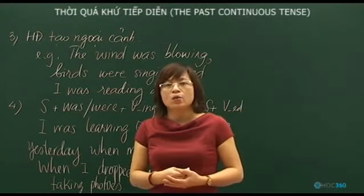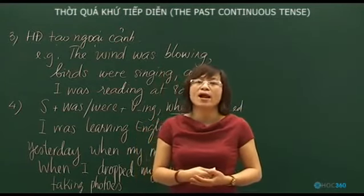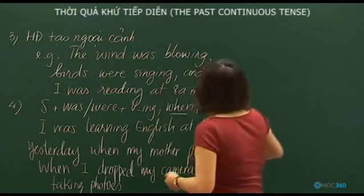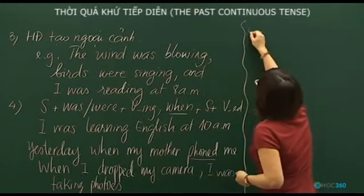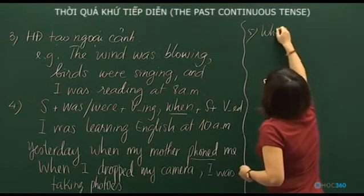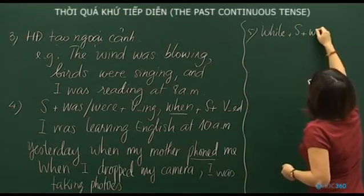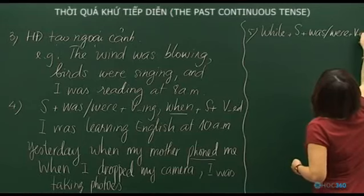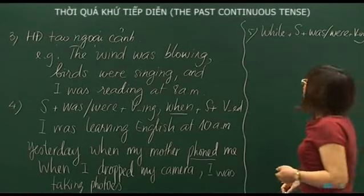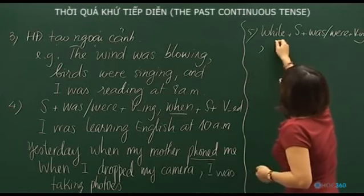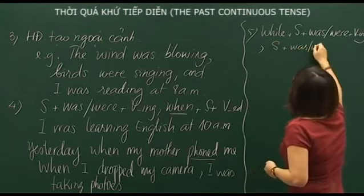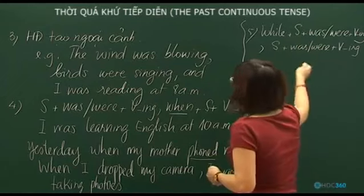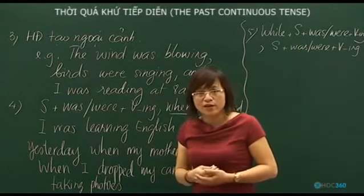Besides 'when', the past continuous is also used with 'while' to describe two actions happening simultaneously. The structure: we can bring 'while' to the front, followed by a past continuous clause + verb-ing, then a comma, then another past continuous clause.